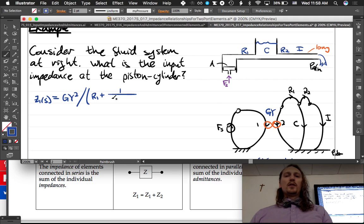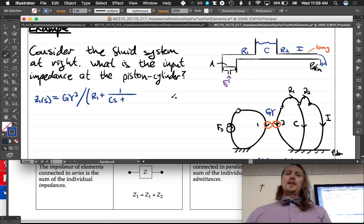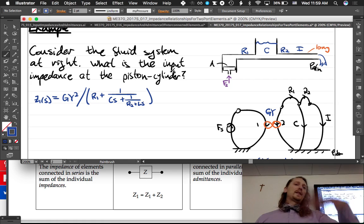1 over, 1 over ZC, which is actually 1 over CS, right? Which gives us CS there. And then we have plus 1 over the impedance of this whole side here, 1 over R2 plus Ls, the impedance of I. And then we can simplify, right? But once again, it's a one-liner.